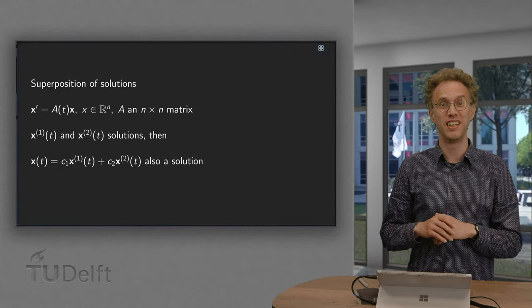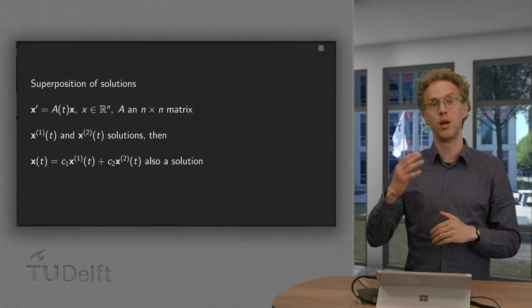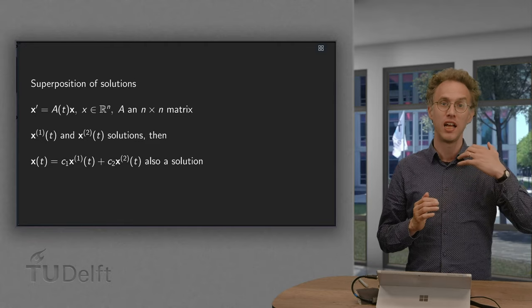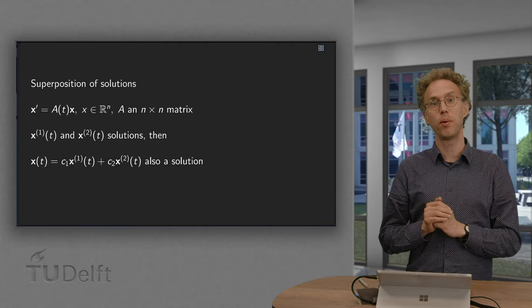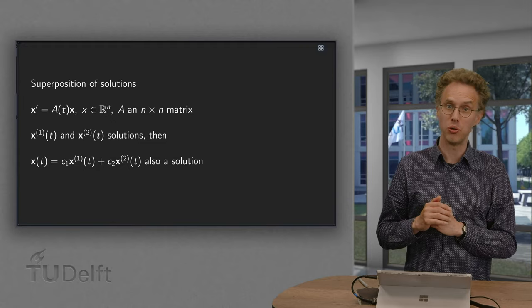Linear homogeneous systems have the nice property of superposition. What does this mean? If we have two solutions of our problem, we can add them up and then we still have a solution.